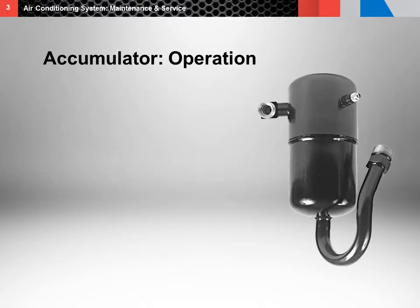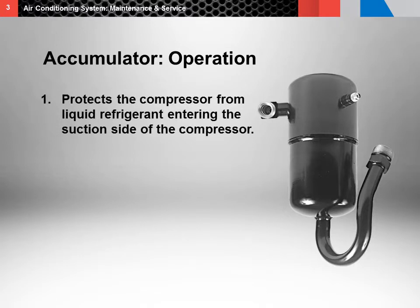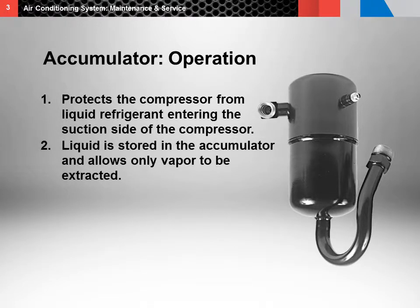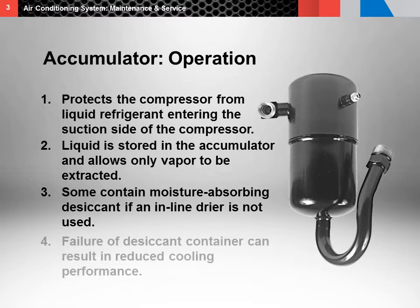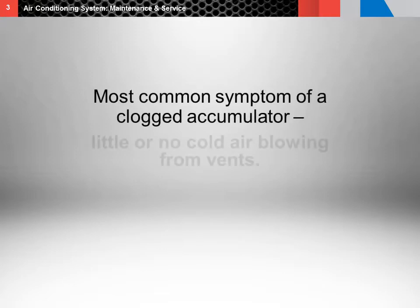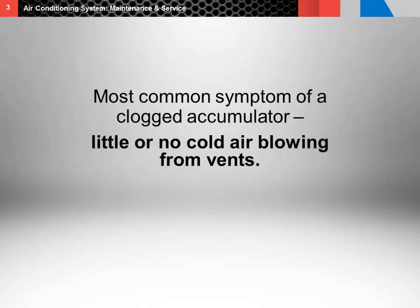Now, some tips on servicing the accumulator on the orifice tube system. The accumulator protects the compressor from liquid refrigerant entering the suction side of the compressor. Liquid is stored in the accumulator, which allows only vapor to be extracted. Some contain moisture-absorbing desiccant if an inline dryer is not used. Failure of the desiccant container could result in a clogged or restricted accumulator, resulting in reduction in cooling performance. The most common symptom of a clogged accumulator is little or no cold air blowing from your air conditioner vents. The accumulator also removes moisture and debris from the refrigerant. If it becomes clogged, refrigerant will not properly circulate, which leads to decreased cold air.